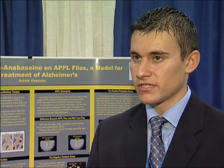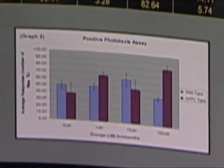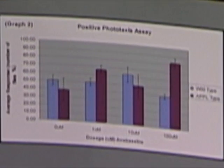A regular fly takes about 4 seconds to reach the top of a fly vial, which is 6.5 centimeters long. A fly with Alzheimer's takes 9 seconds to reach the top, so there's a big differentiation between the two.